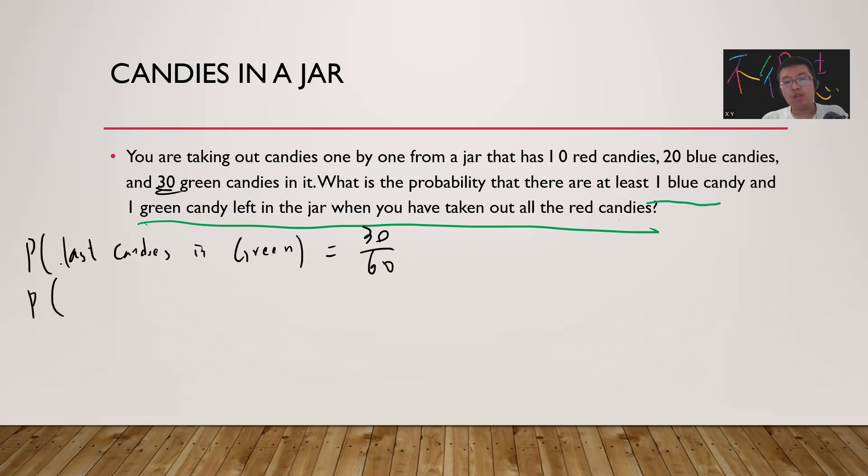Right, since the goal is to take out all the red candies, what you need to do is show that there are two situations: the last candy is green or the last candy is blue. What's the probability the last candy is blue? It's 20 divided by 60, which equals 1/3.